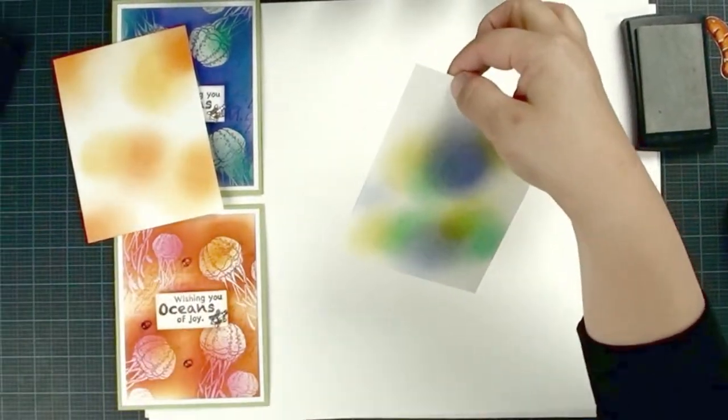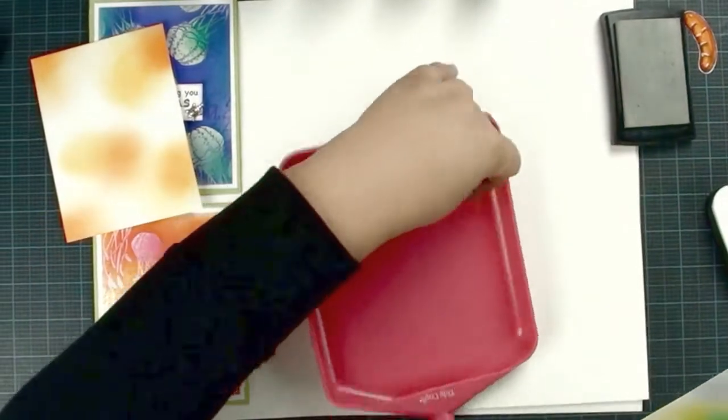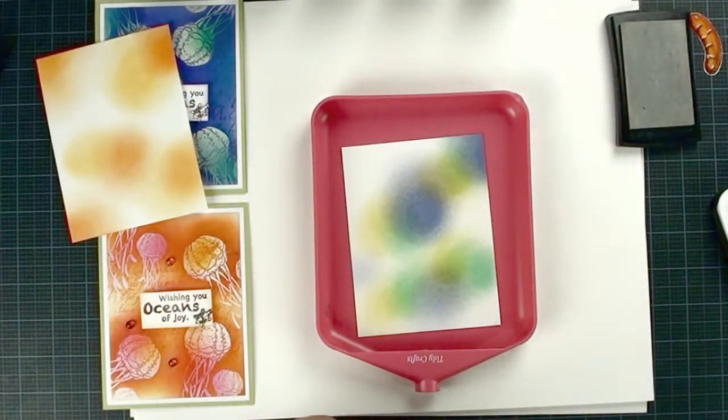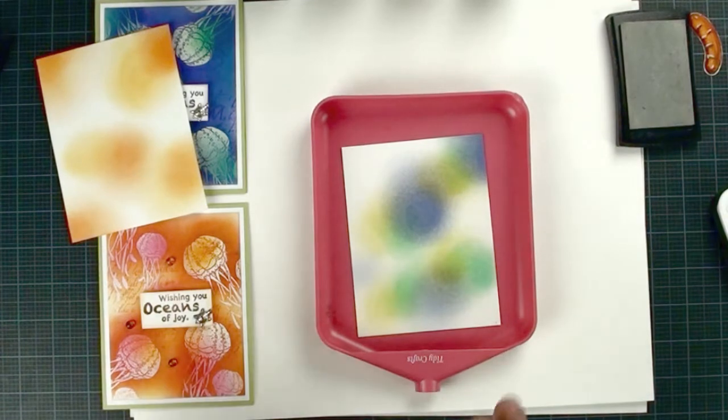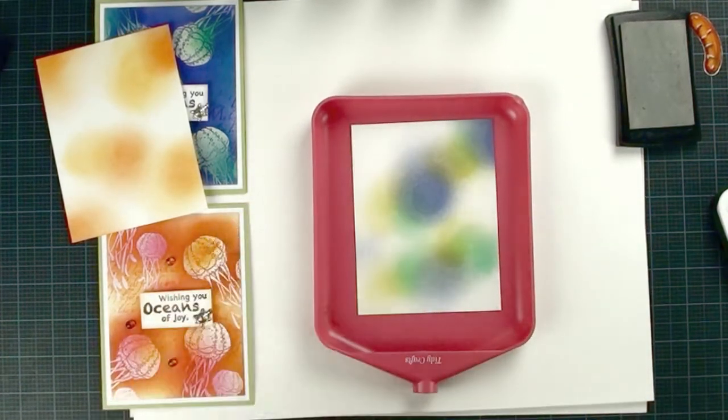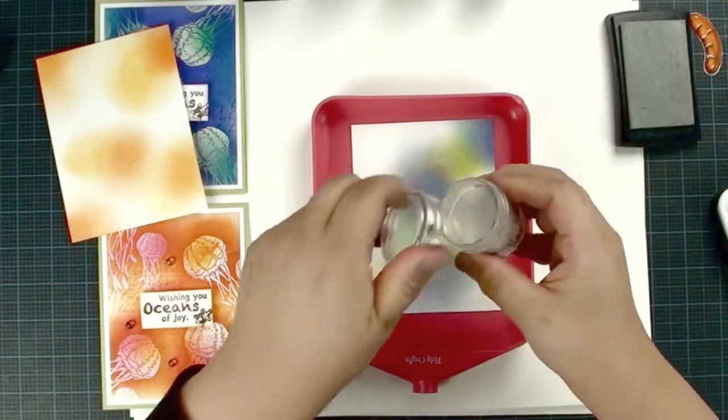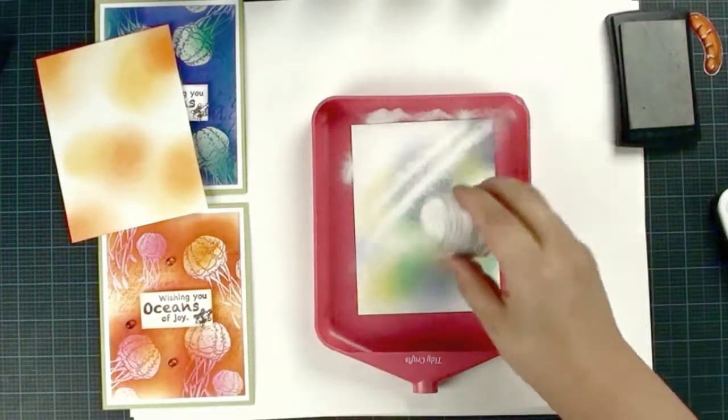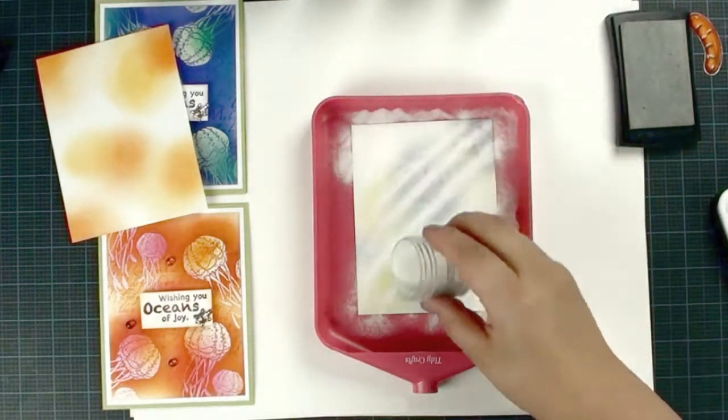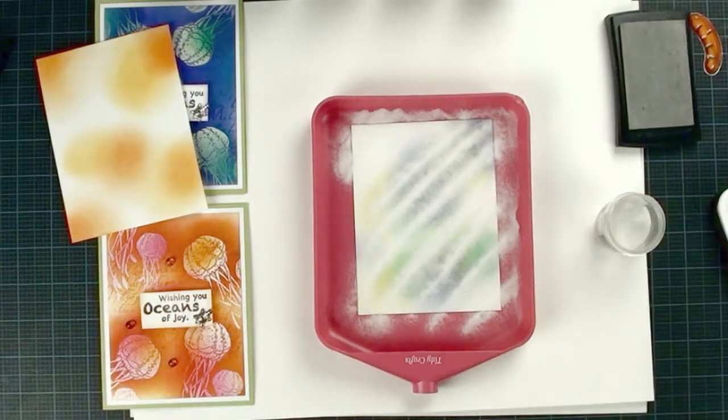Then we're going to do the embossing. Please check my tutorial number 115. There are a lot of tips to show you how to get a nice embossing powder image. We'll fast forward how to do the clear embossing.